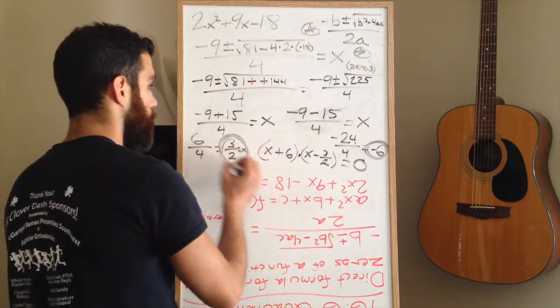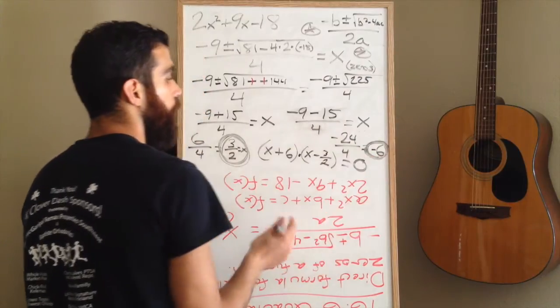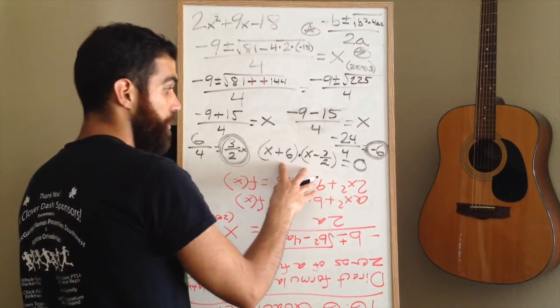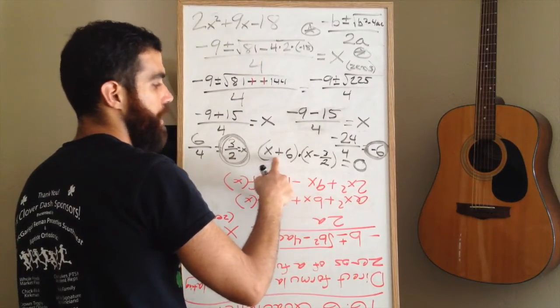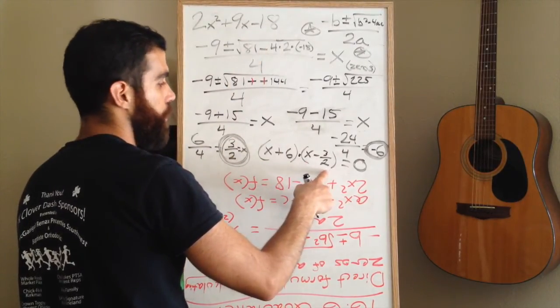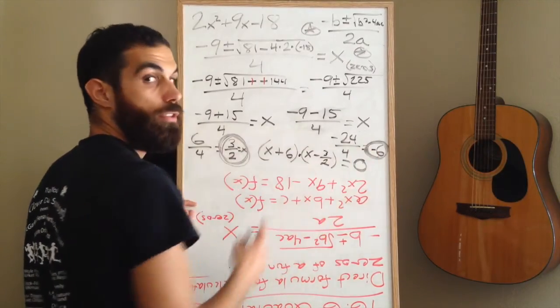These are your answers. And if you wrote them out as factors that would give you the original problem, those binomials would look like this. x plus 6 and x minus 3 over 2. The opposites of your answers.